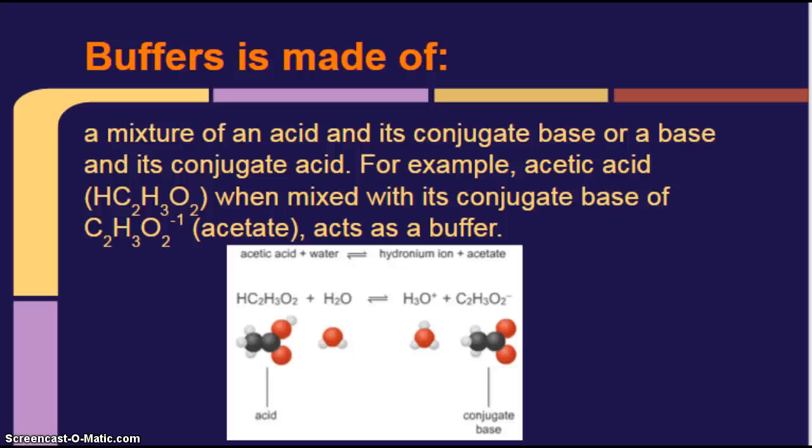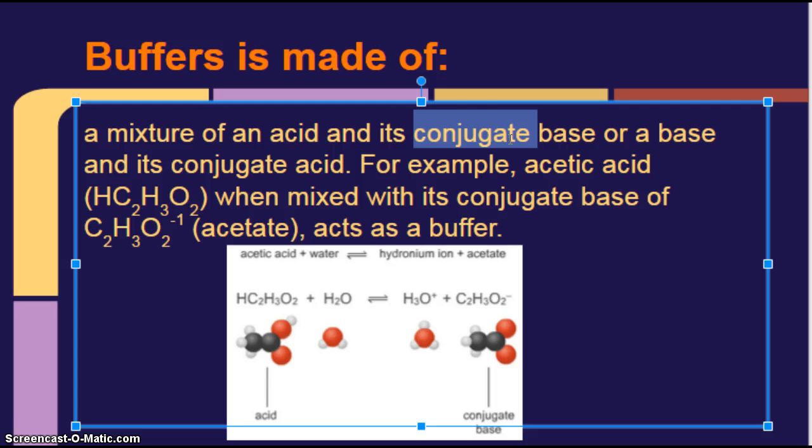What are buffers made of? Buffers are a mixture of an acid and its conjugate base, or a base and its conjugate acid. Conjugate just basically means matching. For example, acetic acid is HC2H3O2. When mixed with this conjugate base, it is C2H3O2. Do you see how these are almost exactly the same? Except that this one has a minus one charge, and this one has a hydrogen. Okay, so it has a hydrogen. This one has a minus one charge. That's the only difference. That's why we call it an acid and the conjugate, or matching, base. And when they're together, it acts as a buffer.